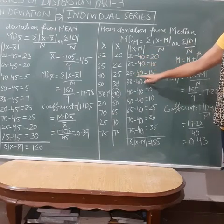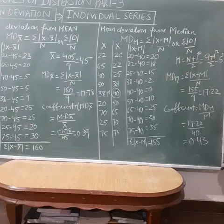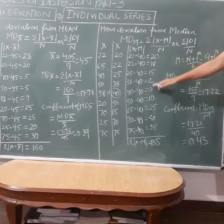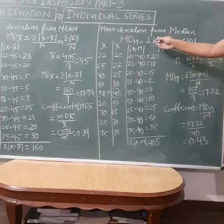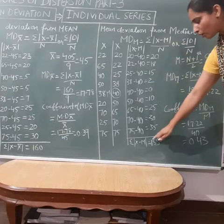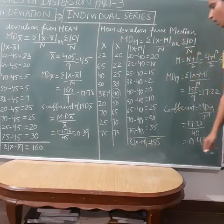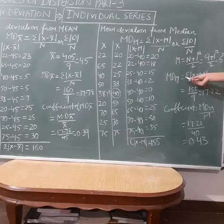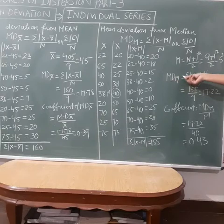Continuing: 40 minus 40, 50 minus 40, 65 minus 40, 70 minus 40, and 75 minus 40. We ignore the signs because of the modulus, and the total of |x minus median| comes to 155.